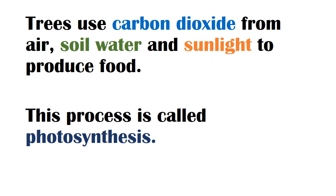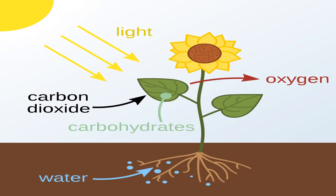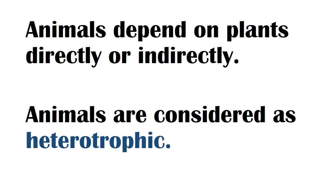Trees use carbon dioxide from air, soil water, and sunlight to produce food. This process is called photosynthesis. This is the picture of photosynthesis. Animals depend on plants directly or indirectly, so animals are considered heterotrophic.